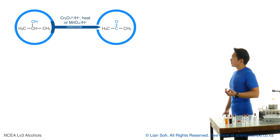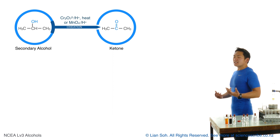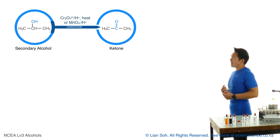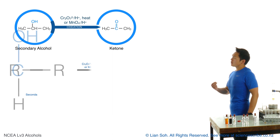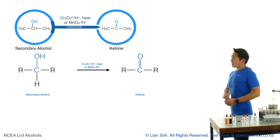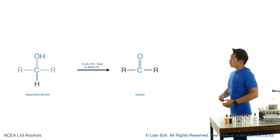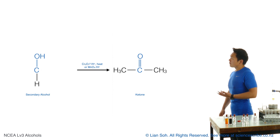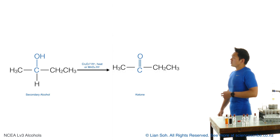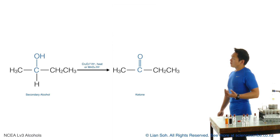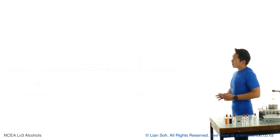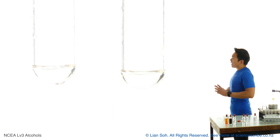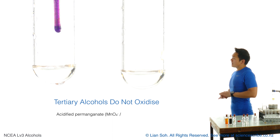As for secondary alcohols, last year we told you they oxidize to form ketones. We didn't need you to draw the structure for ketones at NCEA Level 2, but ketones are new for NCEA Level 3. To draw the structure, you swap the OH for a double-bond O (C=O), and make sure you also remove a hydrogen — because carbons must always have exactly four bonds.